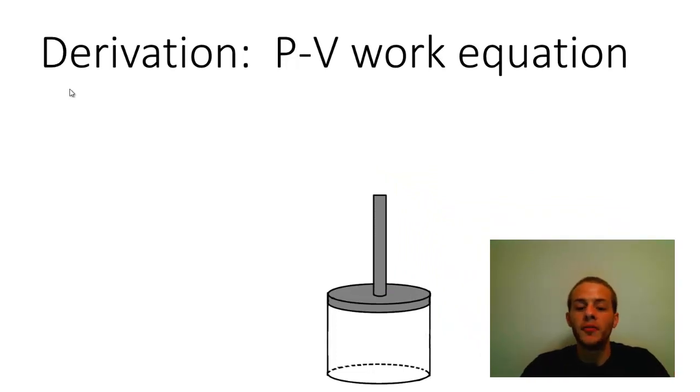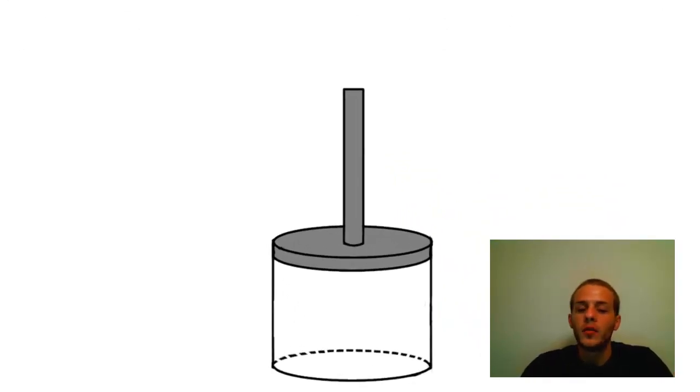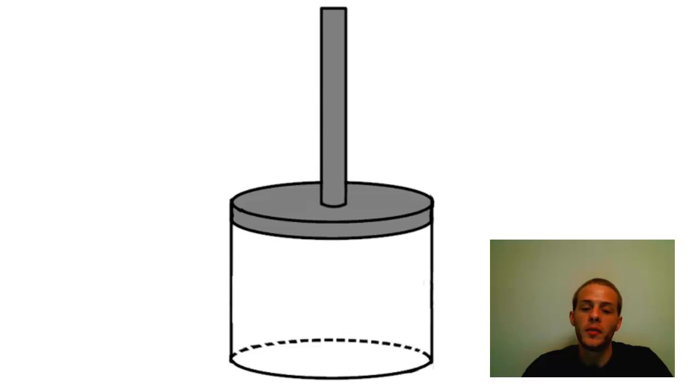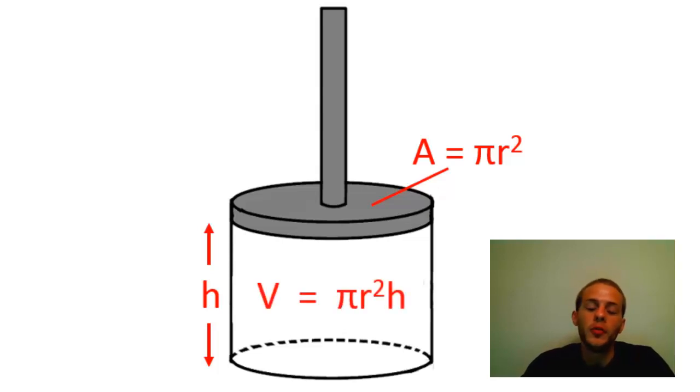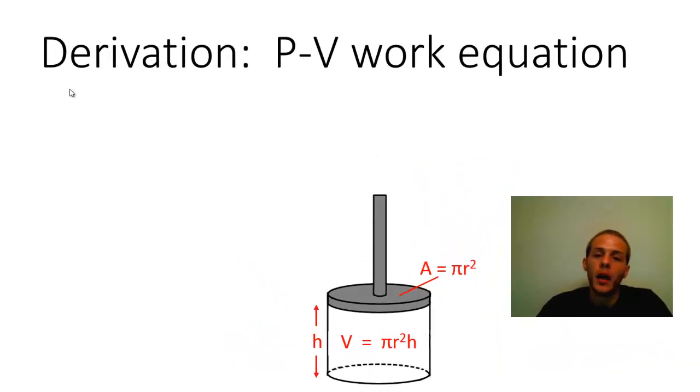So again imagine we have a cylinder like this one. There's a couple of things we could figure out about the cylinder just with a ruler or a tape measure, some device that measures length. We could find the area, the cross sectional circular area of that cylinder by using πr². I'm sure you're already familiar with that formula. And then we could also measure the height of that cylinder. And then we could combine the area and the height and multiply the two of them to get the volume of the cylinder. And that's a lot of useful information.